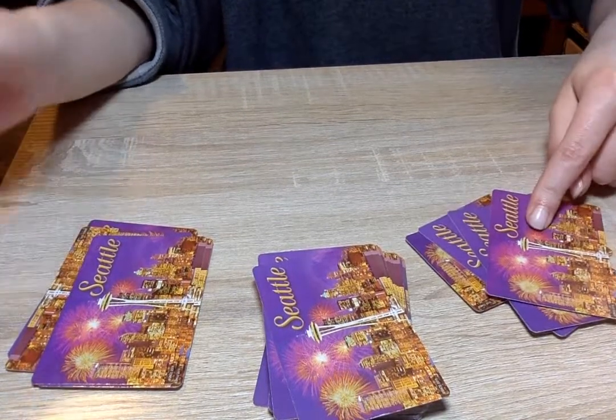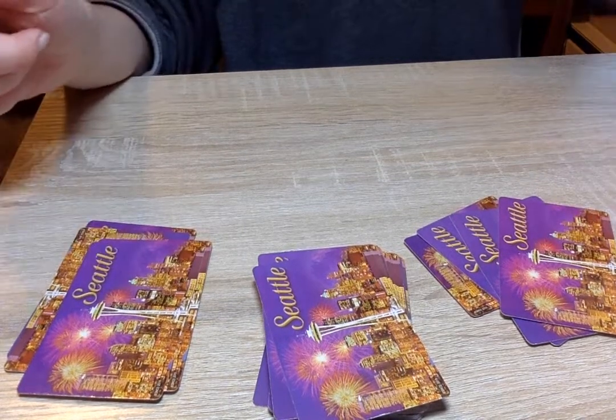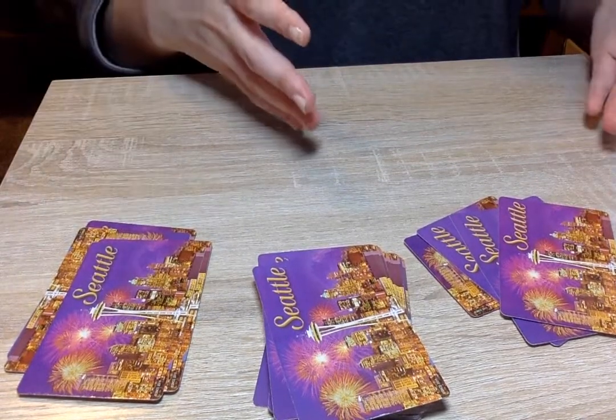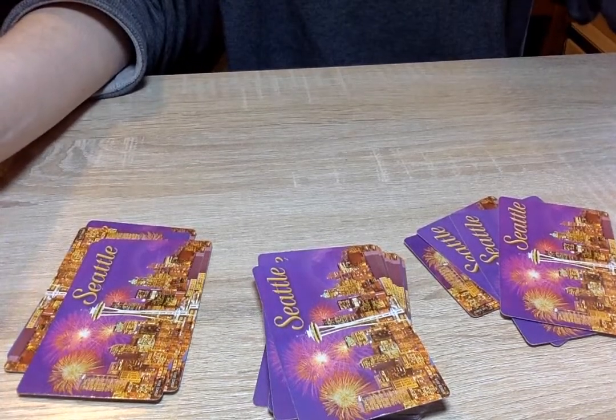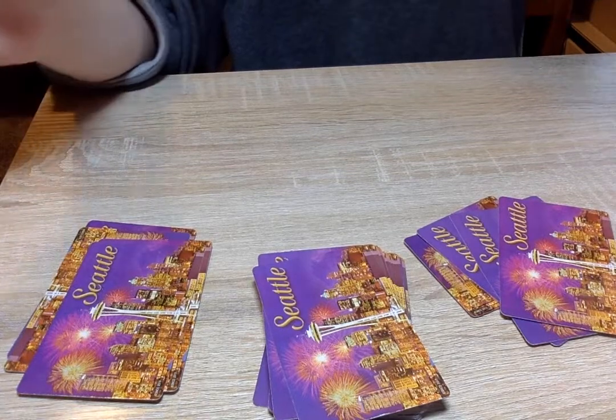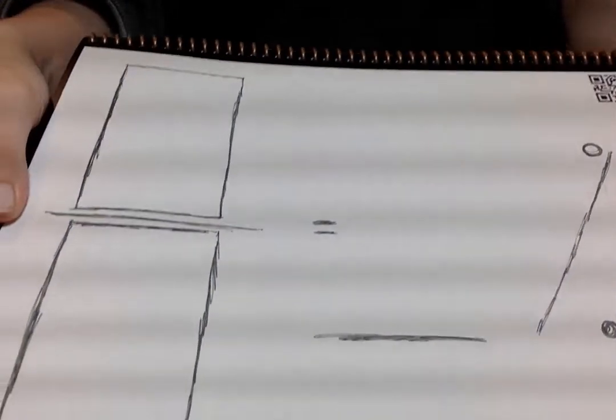So one student gets to be the numerator and one student gets to be the denominator. What they're going to be doing is drawing one card at a time, creating a fraction with it, then creating a percentage that represents that fraction. They're going to take turns being the numerator and denominator, and they're going to be filling it out on this piece of paper here.